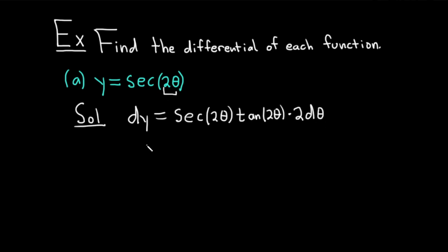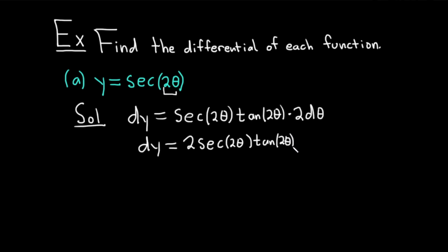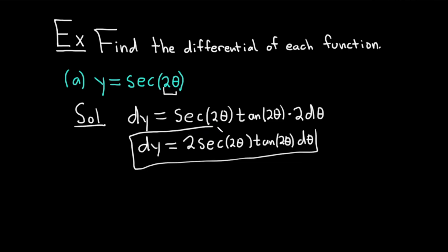The d theta goes at the end — it's just shorthand notation for differentiation. So dy equals 2 secant 2 theta tangent 2 theta d theta. That's the differential of y. It's just another way to write derivatives, and it's very useful when we do integration.